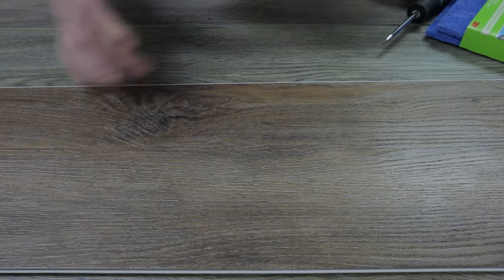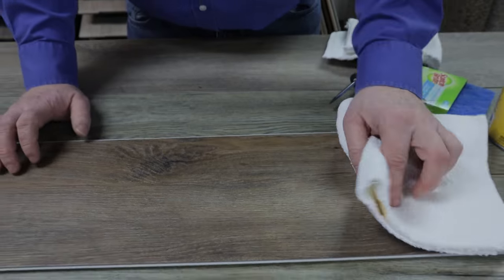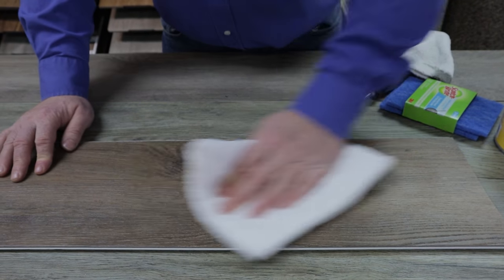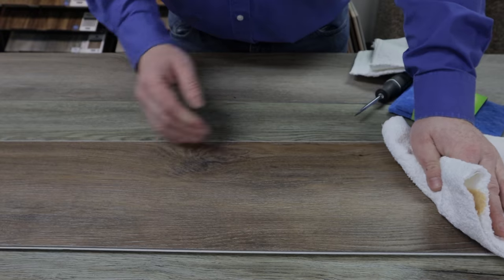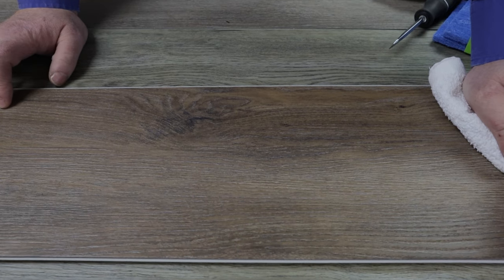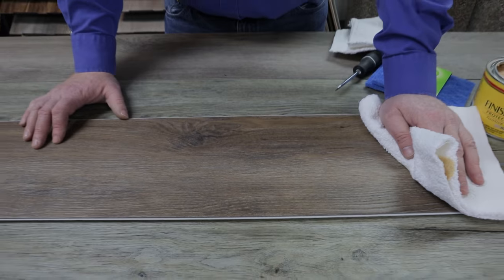Once you get it rubbed in, come back with the rag, flip it over, get a nice dry part and do a nice rub on it. As you can see, it makes the scratches disappear. The scratches will still be there - they won't be completely gone - but you won't see them as much. They'll be a lot less visible to the eye.